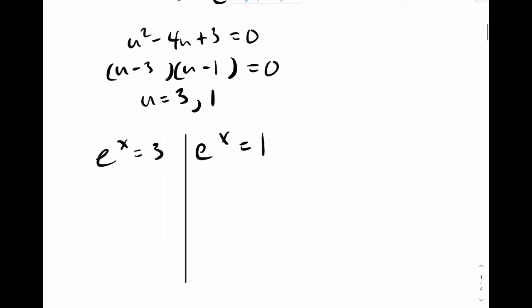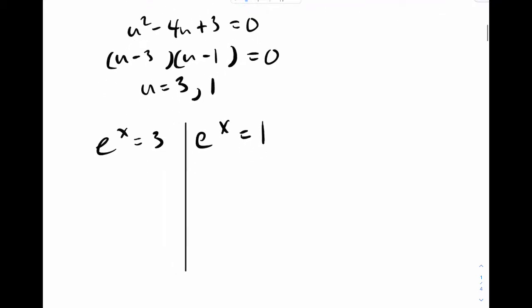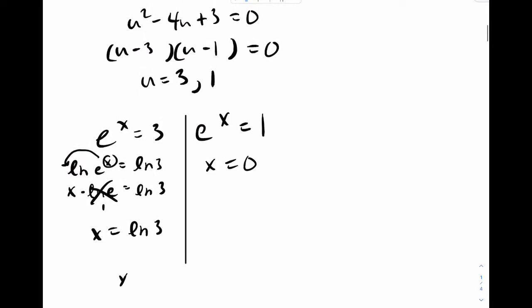So at this point now we can solve. So you can do the same thing we did last class. You can add a ln of both sides for here or natural log. Move the x. x times natural log of e equals natural log 3. That's of course 1. So x is natural log 3. And this one we can solve in our head. We can see that x should be 0. So x is natural log 3 or 0. And there's our answer.